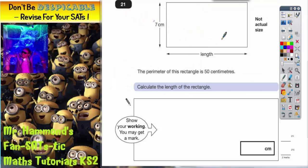Question 21. We've got a picture of a rectangle and it says the perimeter of this rectangle is 50 centimeters. So the total distance all the way around the outside, which is what the perimeter is, has to be 50. Calculate the length of the rectangle.